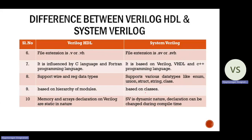The sixth point is file extensions. In Verilog HDL, the file extension is .v or .vh. For SystemVerilog, the file extension is .sv or .svh. So after writing code, Verilog HDL files use .v or .vh, and SystemVerilog files use .sv or .svh.